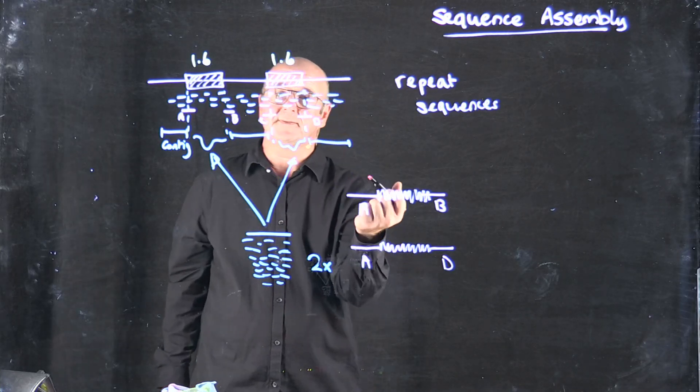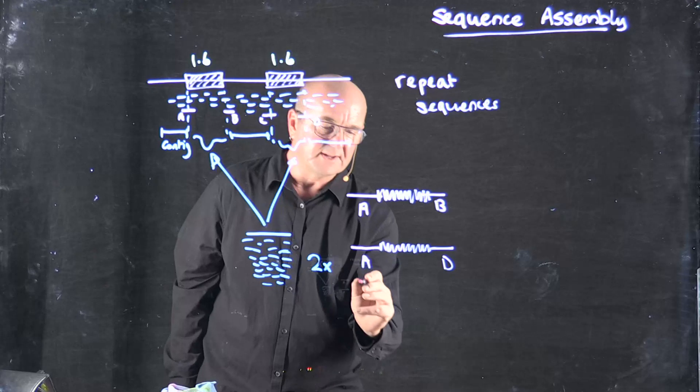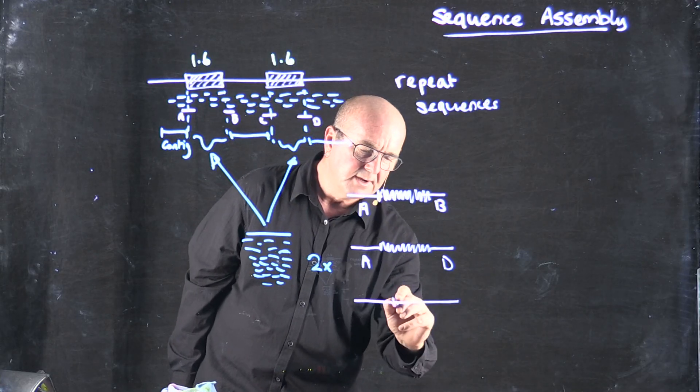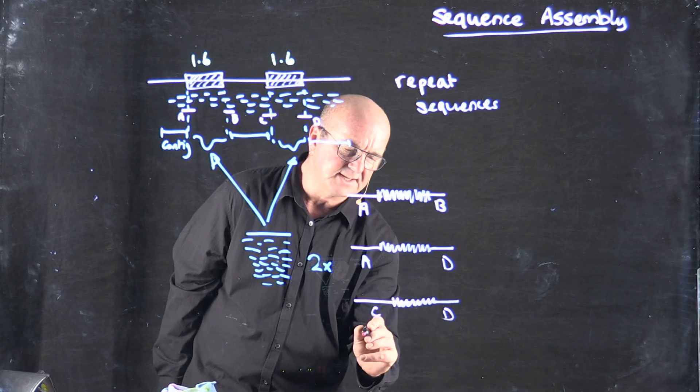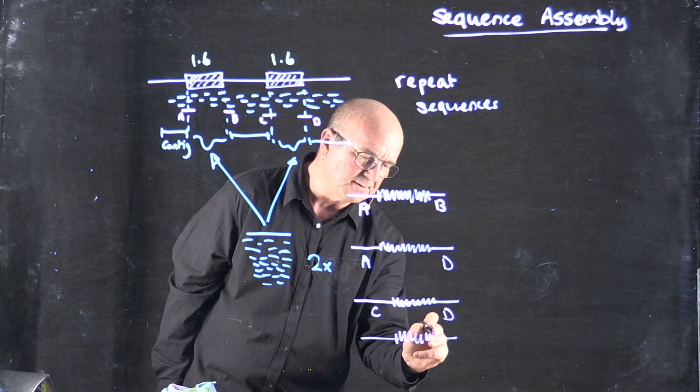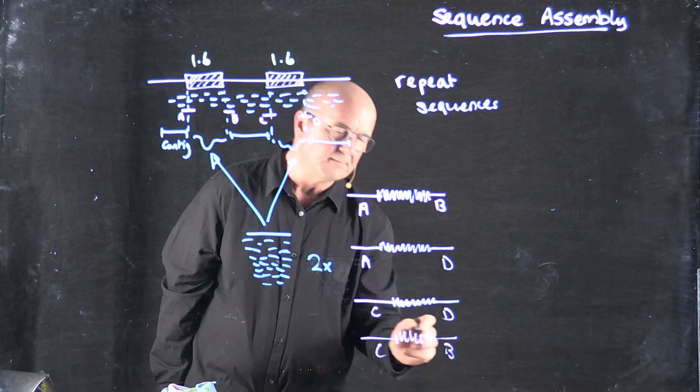Similarly, we have the same problem with C, so we don't know when we go into the assembly whether we're supposed to come out on C and D, or whether we're supposed to come out on C and B.